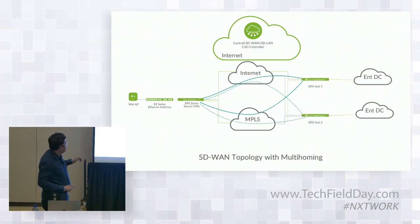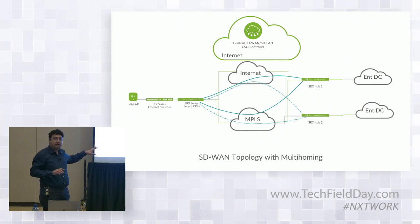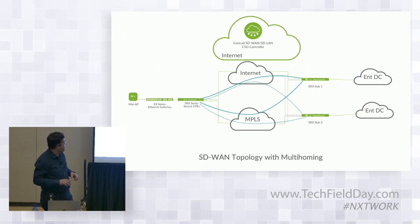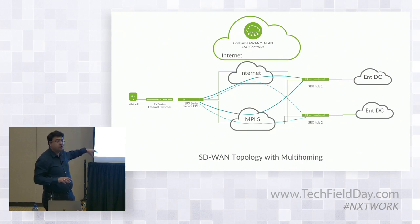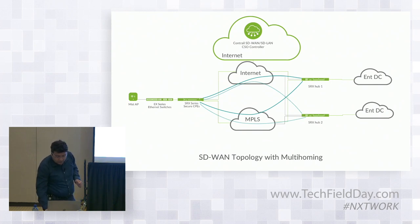I'll also have some sites which are multi-homing, because they are connected to more than one hub. Each of these devices can also connect with multiple different hubs, and each can actually be a dual CPE as well. So this is the very high-level topology diagram.